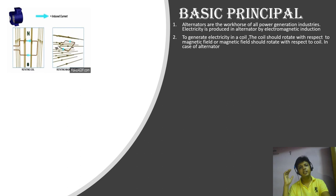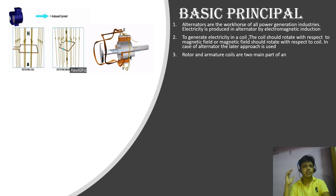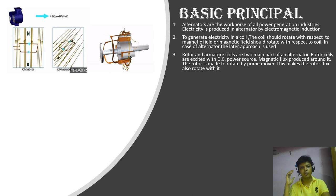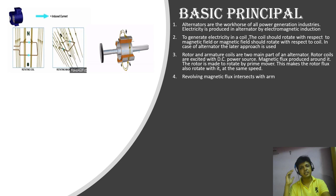In the case of alternator the latter approach is used. Rotor and the armature coil are the two main part of alternator. Rotor coil are excited from DC power source and magnetic flux produced around it. The rotor is made to rotate by prime mover. This makes the rotor flux also rotate with it at the same speed.